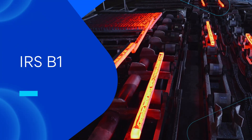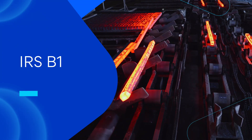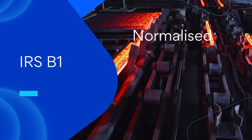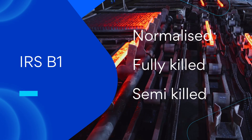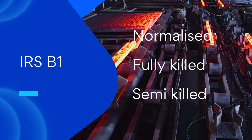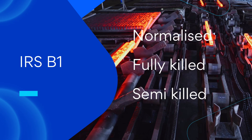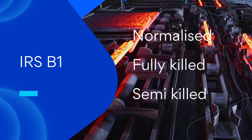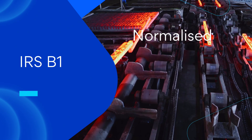IRS B1 Fabrication Specification uses terms like normalized steel, fully killed steel, and semi-killed steel. As bridge professionals, we are supposed to have an understanding of these terms. Let's understand them in this video one by one, starting with normalizing.